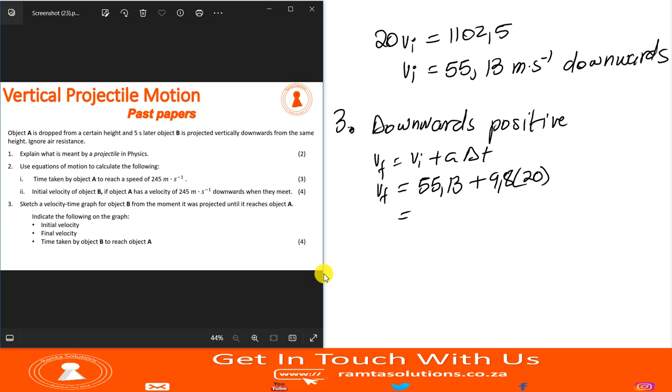Acceleration is 9.8, and the time is simply 20 seconds. So let's see. 55.13 plus 20 times 9.8. What do we get? We get 251.13, 251.13 meters per second downwards.